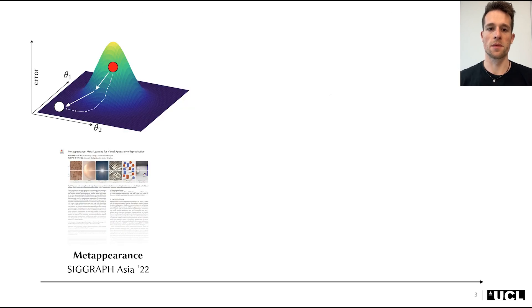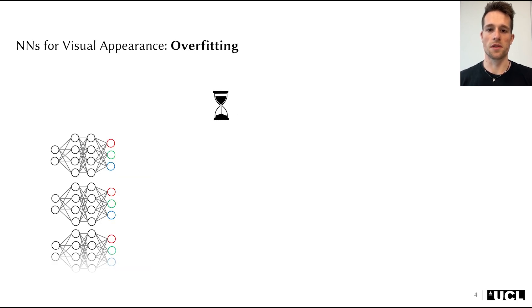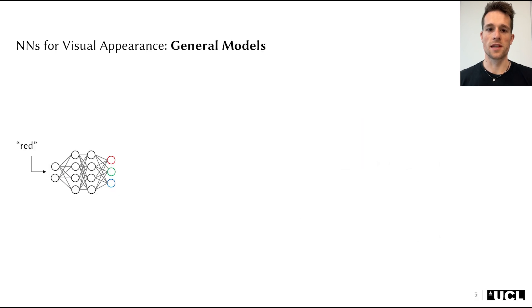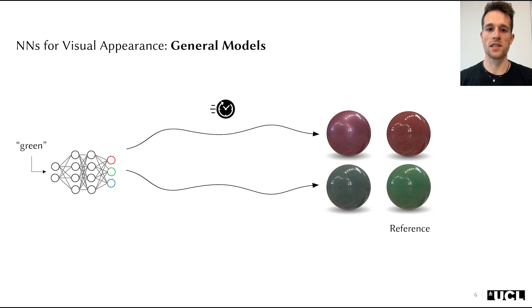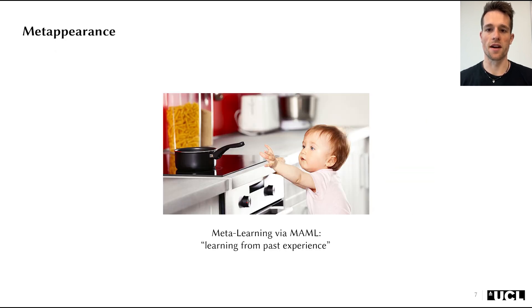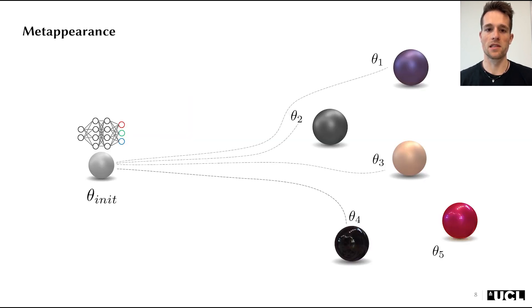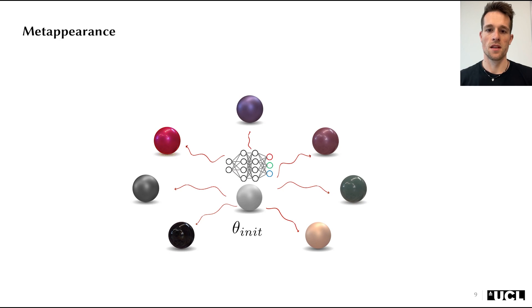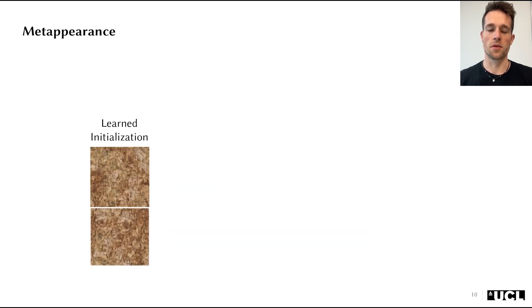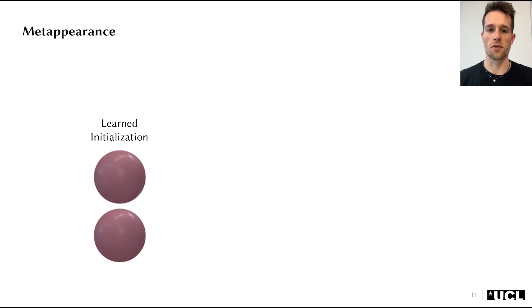In my first project, MetaAppearance, we tackle the problem of slow network convergence in inverse rendering. Usually, we train appearance models via gradient descent, which uses many small steps to converge to a solution. Overfitting a network can be a slow process taking several hours. On the other hand, general inference networks are fast, needing only a single forward pass, but often lack fine details. In MetaAppearance, we bridge this gap by introducing the MAML algorithm to the graphics community, where, similar to human learning, we build strong priors by learning from past experience. MetaAppearance learns to adapt the network initialization itself to accelerate subsequent learning, achieving overfitting quality at interactive speeds on textures, SVBRDFs, and even the light transport for an entire scene.